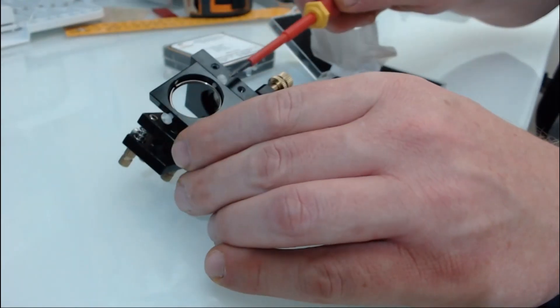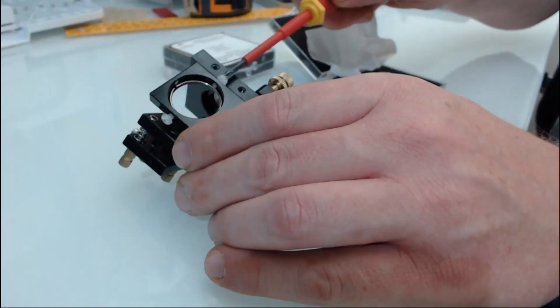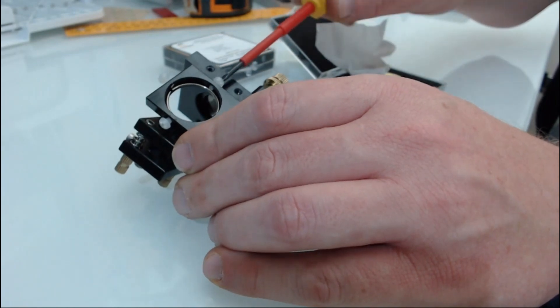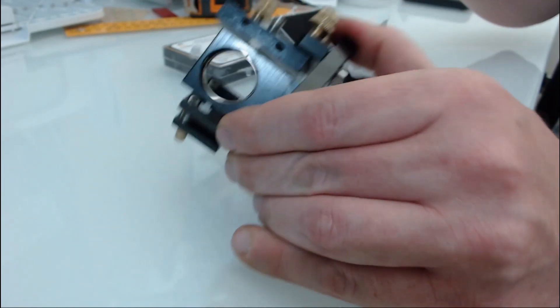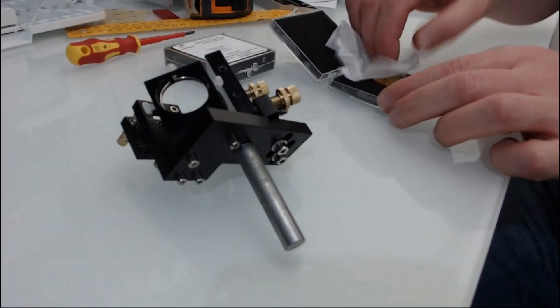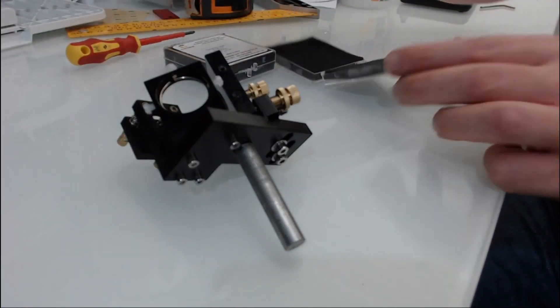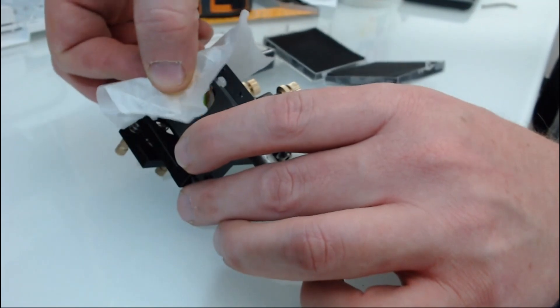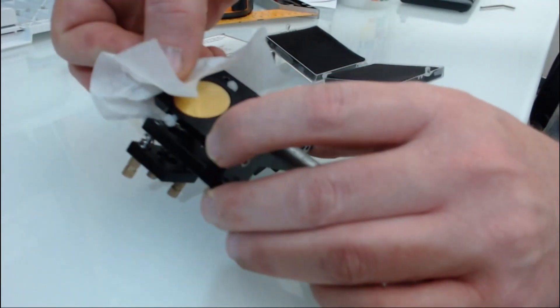They have a little Phillips head on the end so just loosen them up. Using the paper that came with it, you don't want to get fingerprints on there if you can help it. It will slot in.